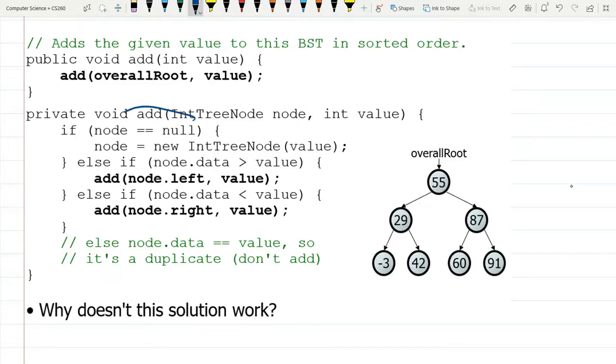Alright, so if node is current nodes null, well, we have a place to insert it, perfect. So you think, ah, node equals new int tree node, and we're done.